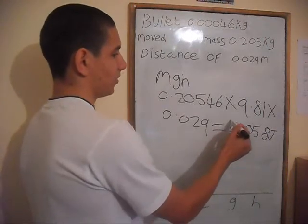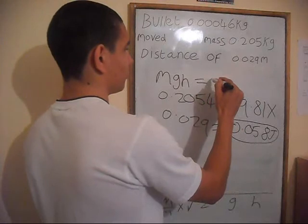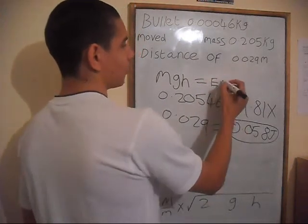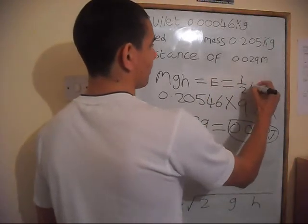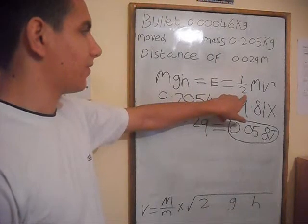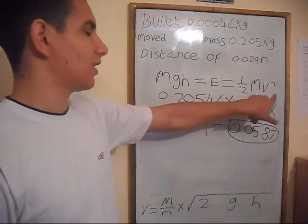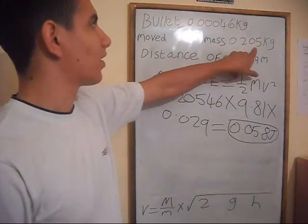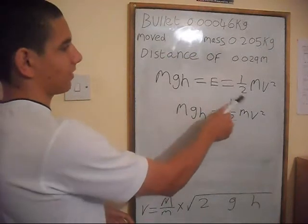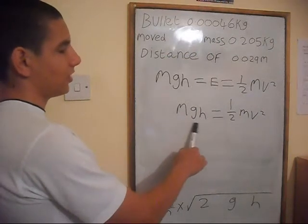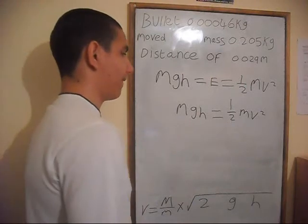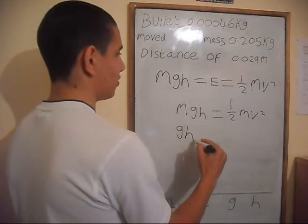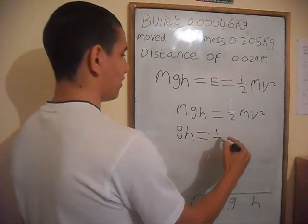So MGH is equal to the energy of the bullet. Kinetic energy equals half Mv squared, which is 0.5 times mass times velocity squared, where mass is the mass of the block plus the mass of the bullet. So from this, MGH equals half Mv squared.